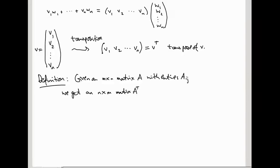This is called A transpose, or A^T, whose i,j-th entry is A_ji. In other words, (A^T)_ij equals A_ji.